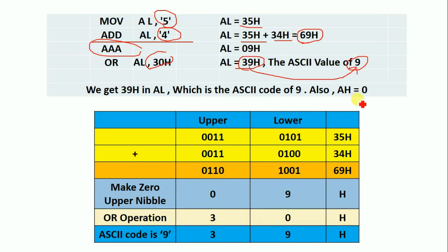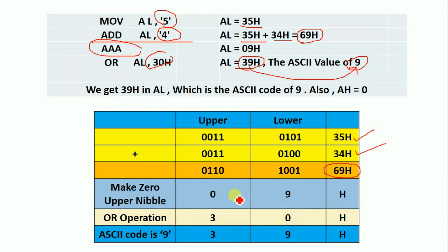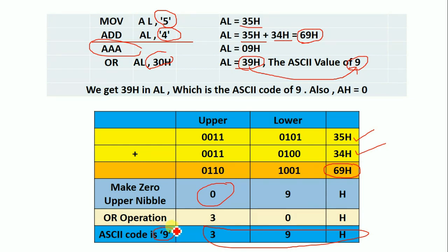To understand this in a simple manner, here is a table. ASCII '5' is 35H in hexadecimal and ASCII '4' is 34H. In binary: 3 is 0011, 5 is 0101, and 4 is 0100. Adding gives 0110 1001, which is 69H. The AAA instruction clears the upper nibble, giving 09H, and then OR with 30H gives 39H, which converts to ASCII '9'. This concludes example 1.